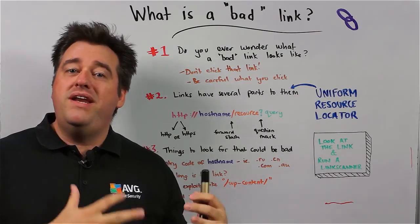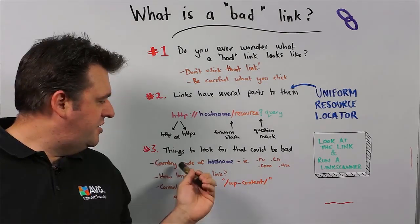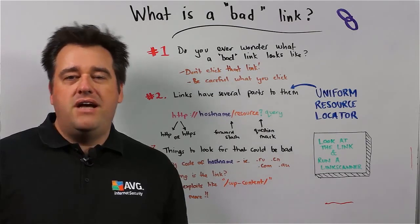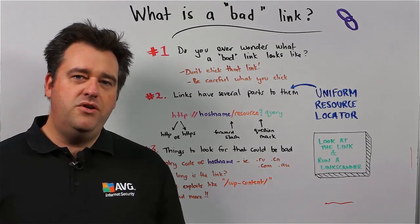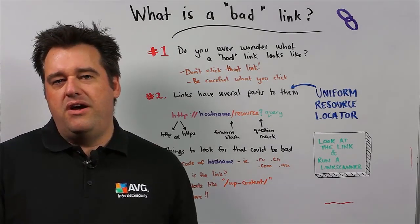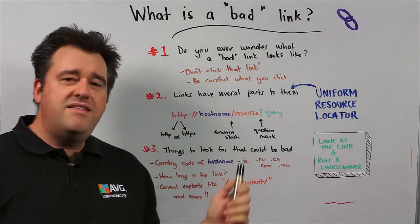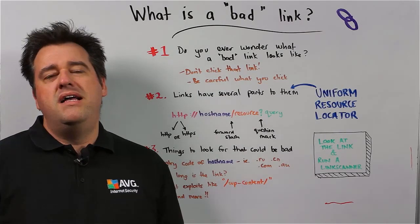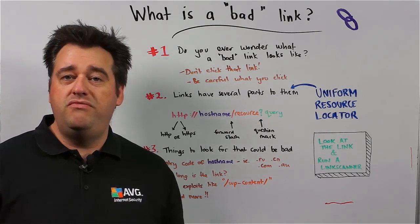Now that we know how URLs are constructed, let's look at practical things we can look for to help us not click on bad links. The first thing I'd suggest is the country code of the host name. For example, www.avg.com.au — the .au part refers to Australia. Think about the implications of that when clicking on a link. Things like .com or .net are not country codes, but things like .ru for Russia or .cn for China — I'm not saying those countries are necessarily bad, but there is a higher likelihood that those types of links can be quite malicious.